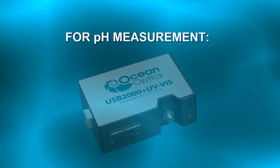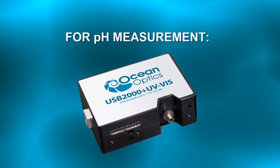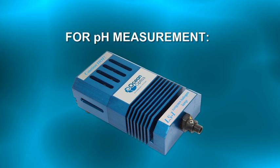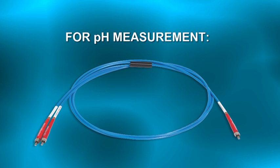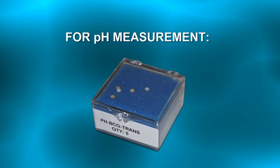For pH, we'll be using the USB 2000 plus spectrometer, an LS1 tungsten light source, a bifurcated optical probe, and reflective pH patches.